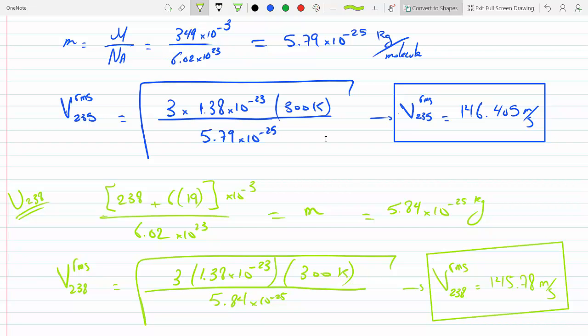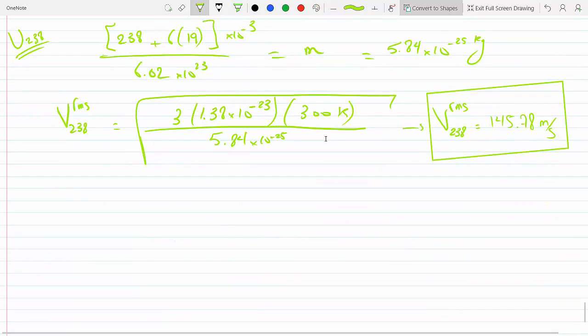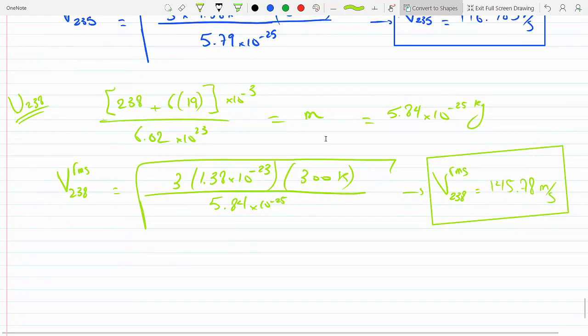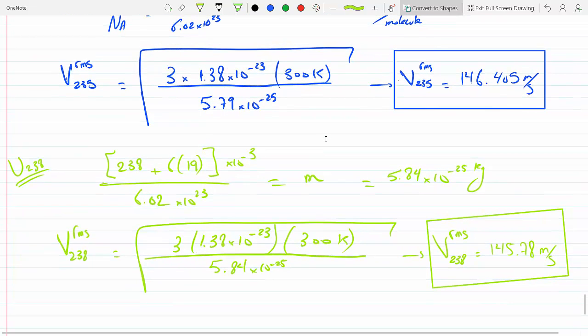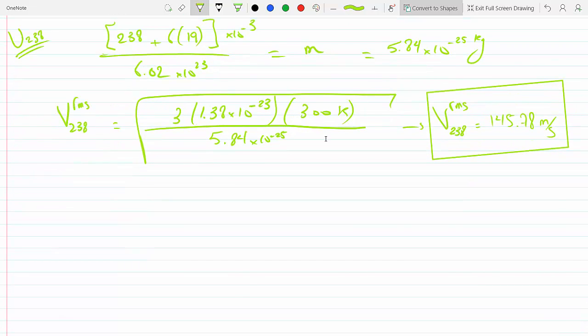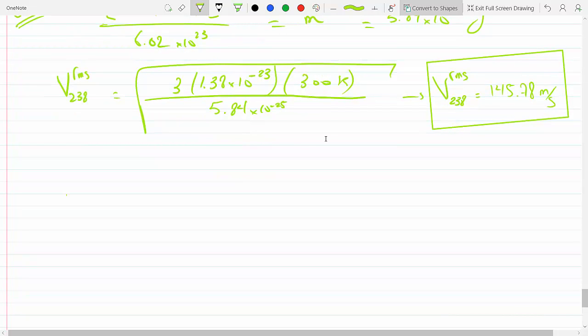If we're trying to compare them, we can look at the percentage difference. I would compare to the faster gas, which is the first one, obviously the lighter one, uranium 235.